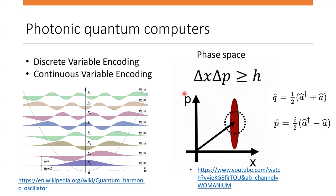On the other side, continuous variable encoding encodes information in many energy levels of a quantum harmonic oscillator, or as the amplitude and phase of a photon. The amplitude and phase probability can be represented on a phase diagram. States of light with a Gaussian-shaped curve of amplitude and phase probability — appearing as a circle in the phase diagram — are called Gaussian states. We can also change the shape by changing the uncertainty of one variable; these are called squeezed states. The amplitude and phase of a photon are not quantized, meaning they can have any value in a continuous spectrum — mathematically this means we deal with an infinite-dimensional Hilbert space.